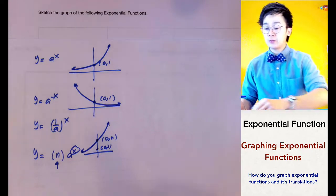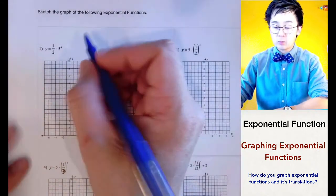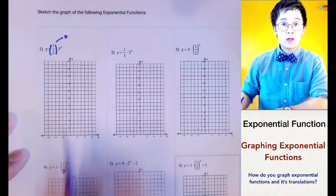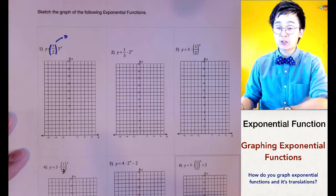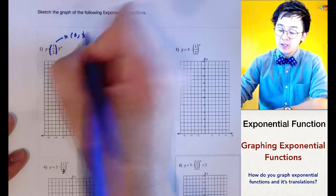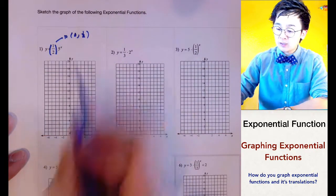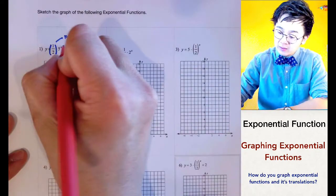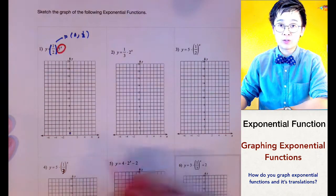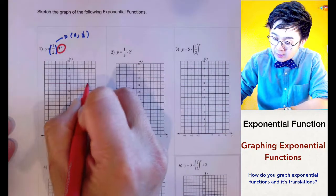These are some of the translations we'll use when graphing exponential functions. For problem number 1, our function has a constant of one-half multiplied to 5 to the x. So one-half is our y-intercept, placing it at (0, 1/2) — somewhere between 0 and 1. This is an increasing graph because the exponent of x is positive and a is greater than 1.